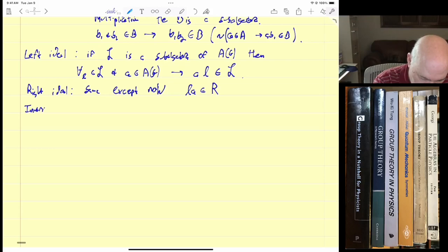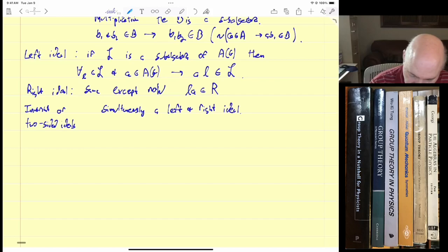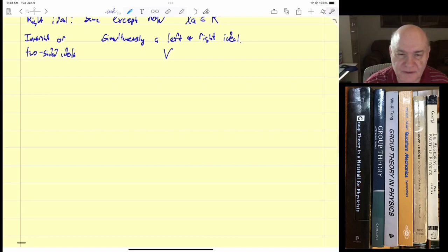And a right ideal is the same, except now it's going to be LA is an element of R. Let's call it, usually we denote right ideals by R. So that's distinguished. And then we have what we call invariant or two-sided ideals. So this just means that it's simultaneously a left and right ideal. And if that's the case, usually we'll use the symbol like V.